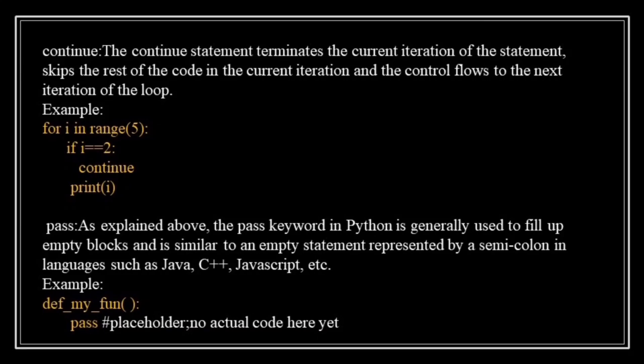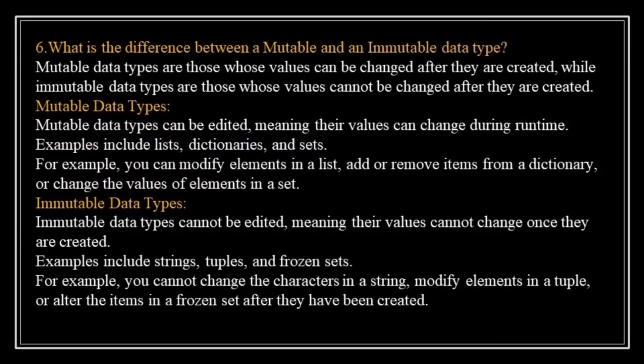The pass keyword is used as a placeholder in Python. It does not perform any action. It's just a way to create an empty function that can be filled in later. In this example, my function doesn't do anything, but you can add code inside the function body.